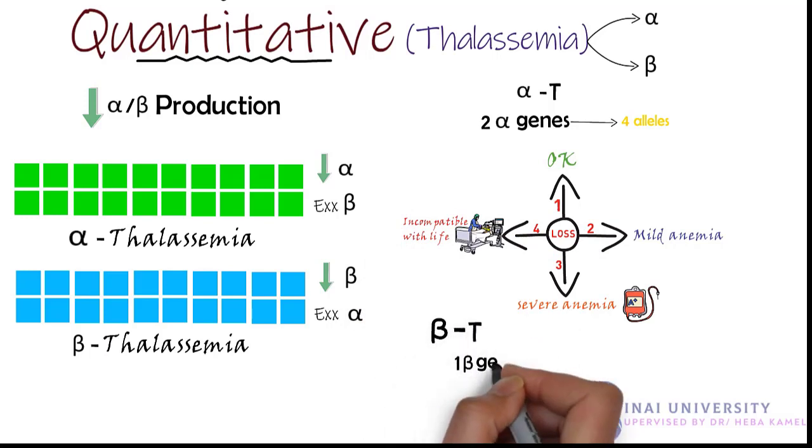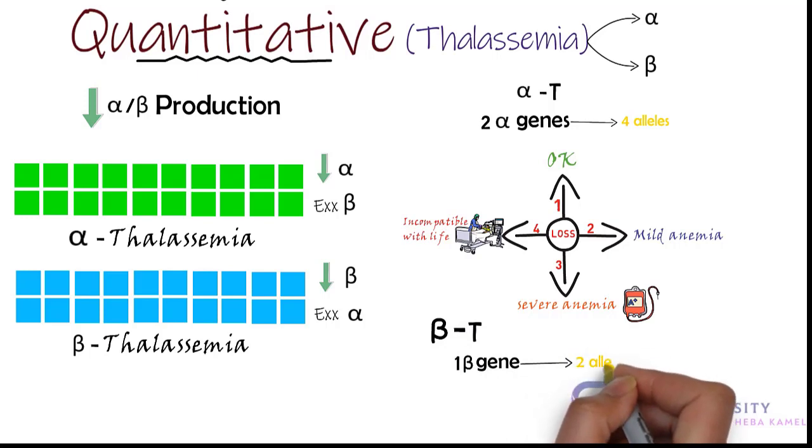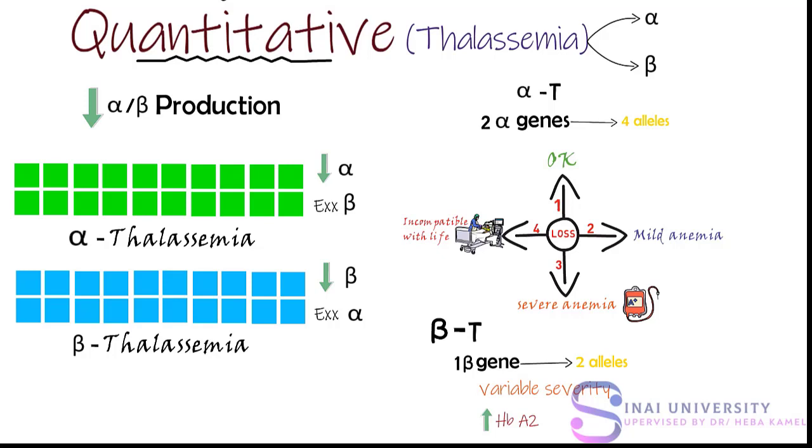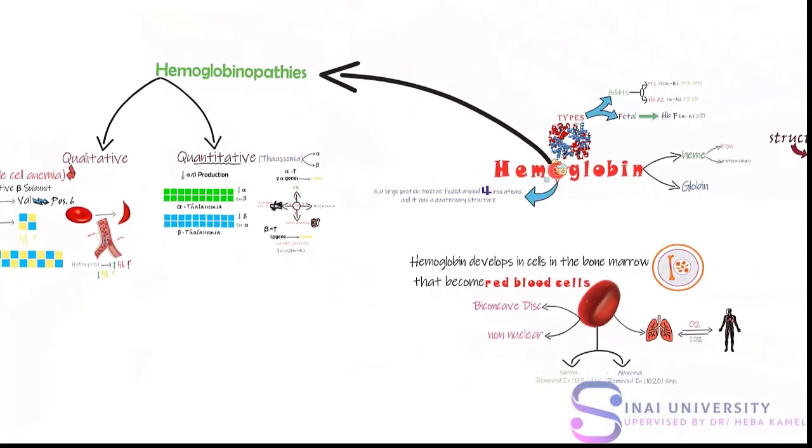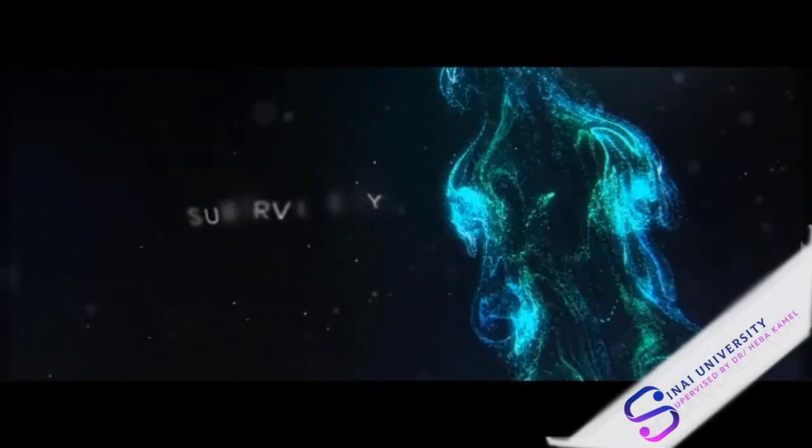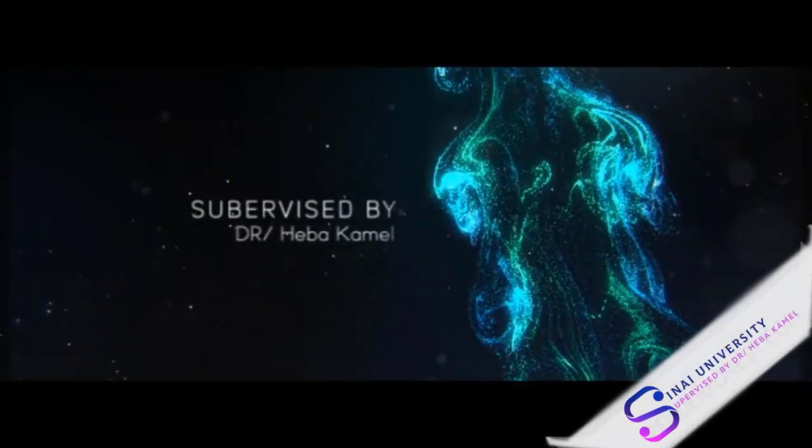Beta thalassemia is encoded by one gene, so each person has two alleles: one from mom and one from dad. The severity of the disease corresponds to the degree of reduction in beta subunit production. In place of beta subunits, the body produces excess delta subunits forming hemoglobin A2, which is made of 2 alpha and 2 delta. Excess hemoglobin A2 is a marker for beta thalassemia.